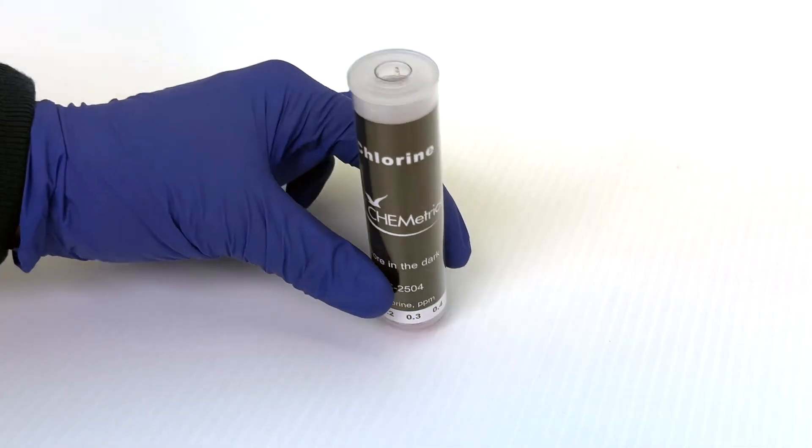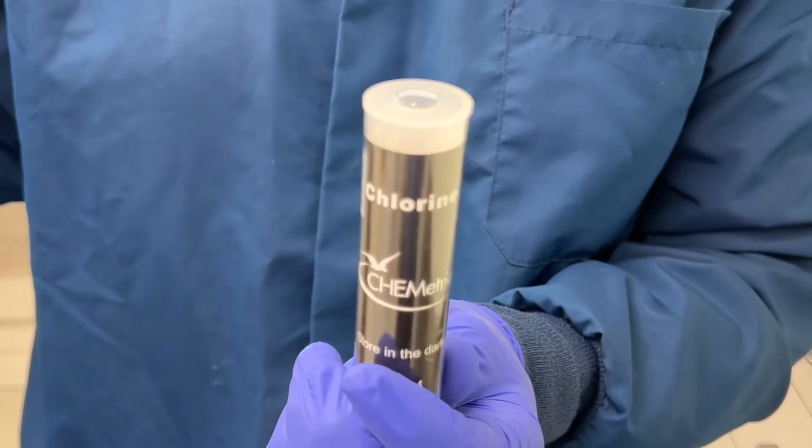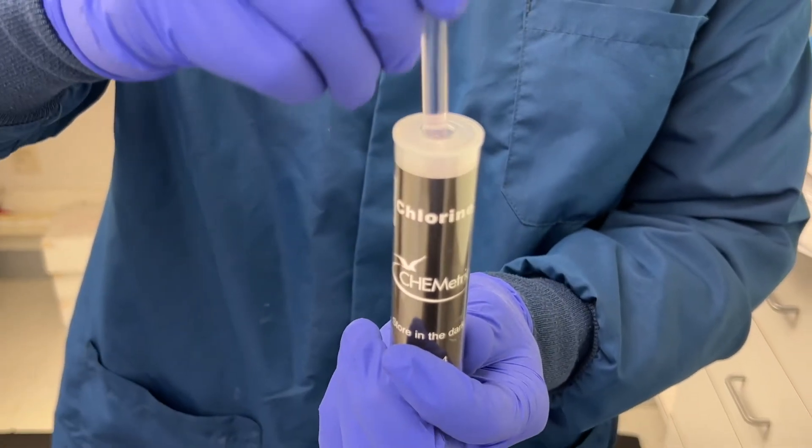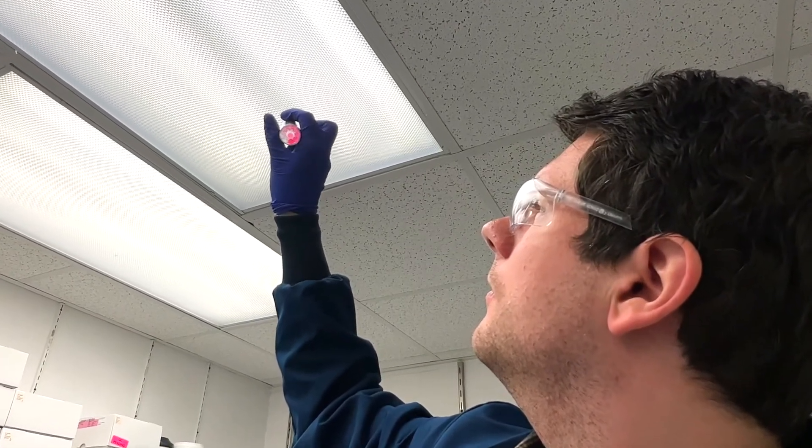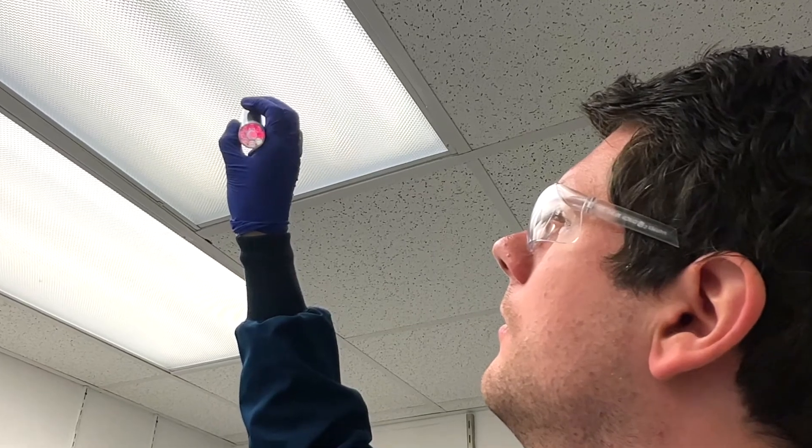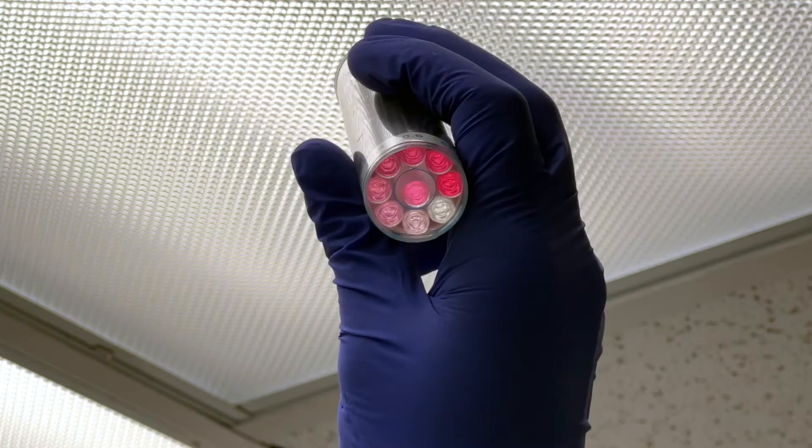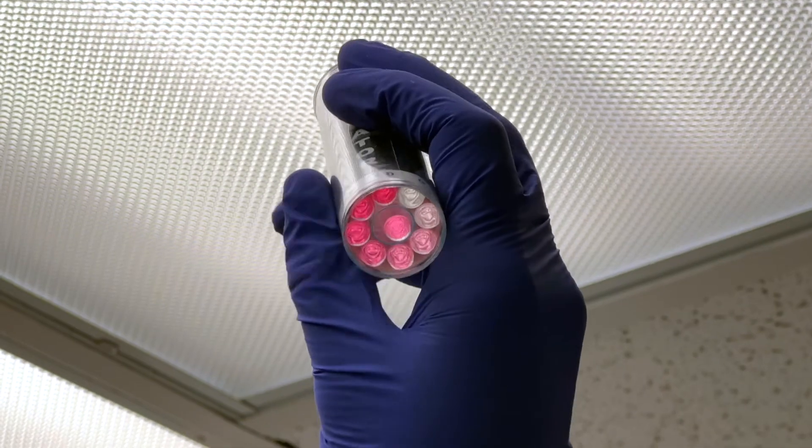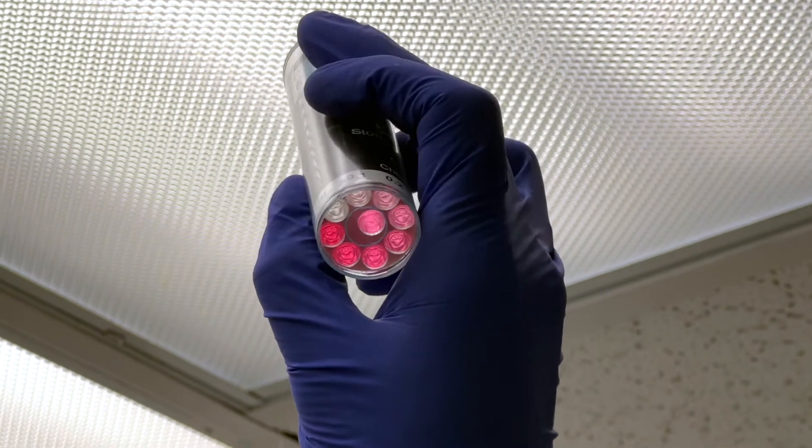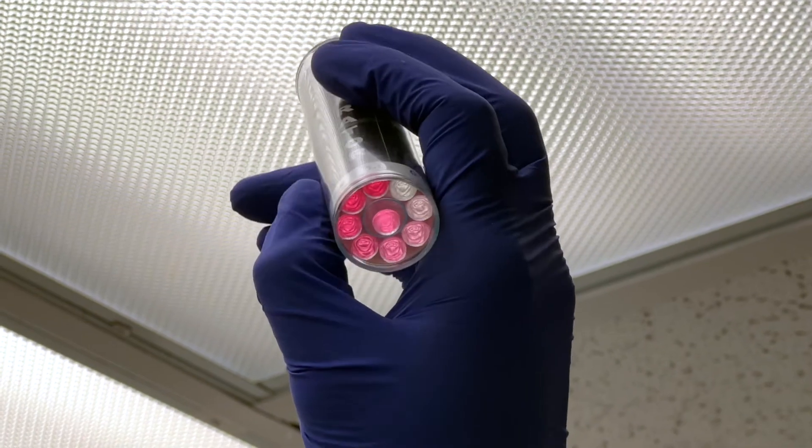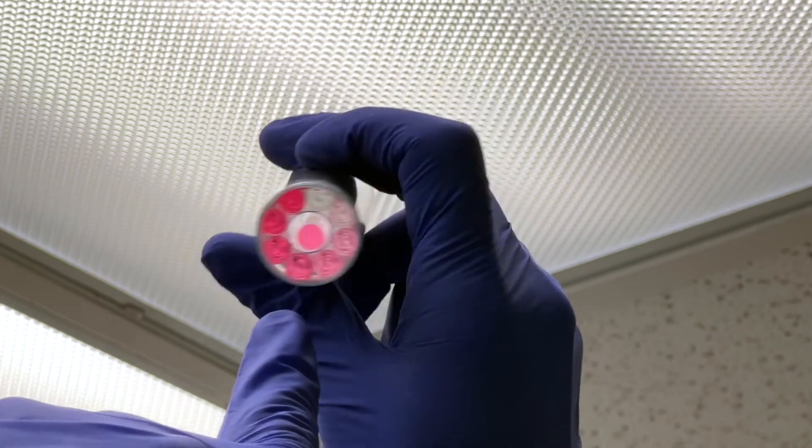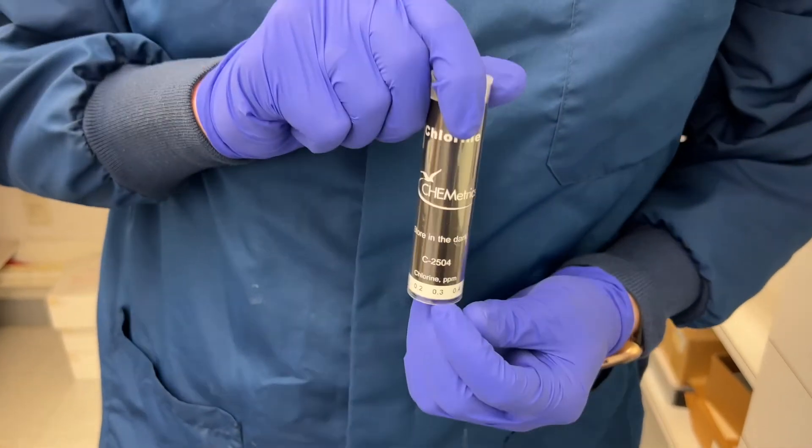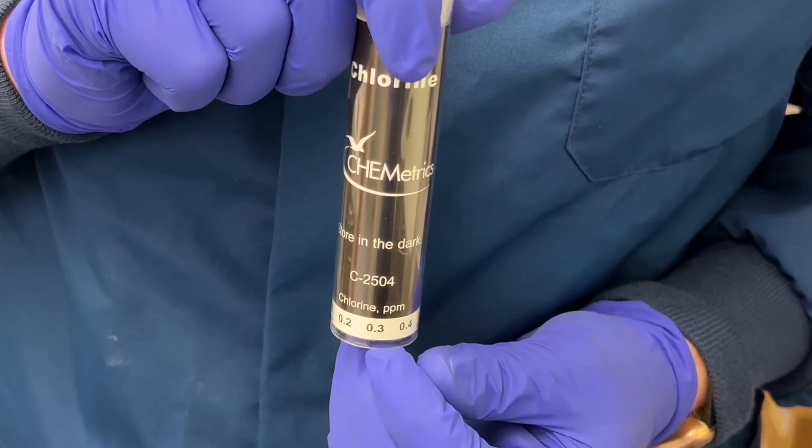When reading a round or low-range comparator, insert the ampoule flat-end first into the comparator, point the comparator toward the light source, and view from the bottom. Align the test ampoule directly above the color standard with the lowest concentration, then slowly turn the comparator counterclockwise until the intensity of the test ampoule's color matches a color standard or appears to be in between those of two color standards. Look to the bottom of the comparator to determine your result.